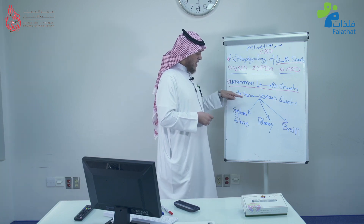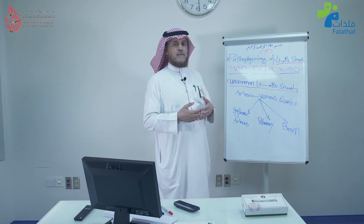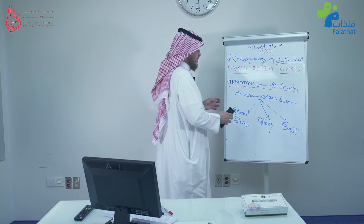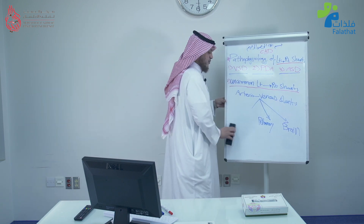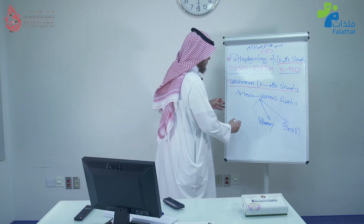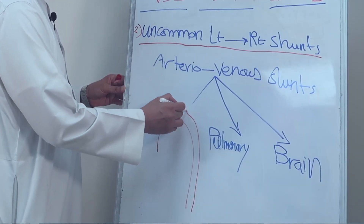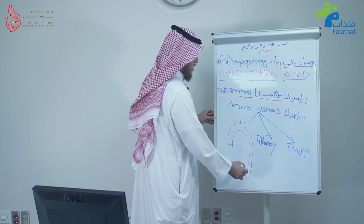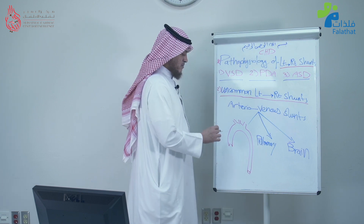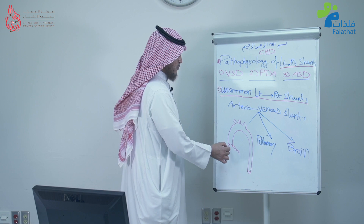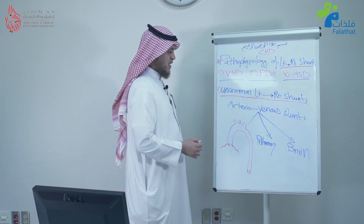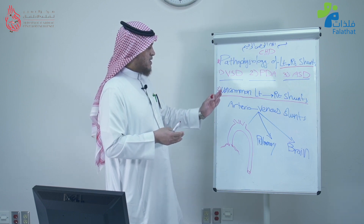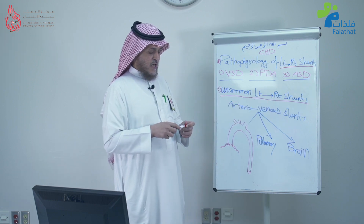One big portion of arteriovenous shunts is systemic arteries to systemic veins shunts. I'm going to put a drawing for you: if we have the aorta, any connection between the aorta or its components — such as the coronaries — to a vein or a venous chamber is called a systemic arteriovenous shunt.